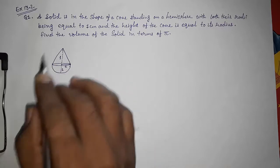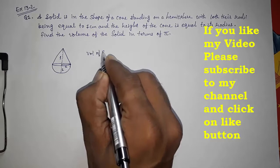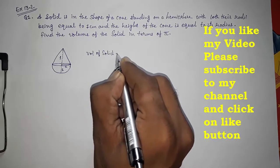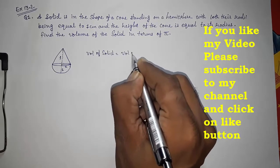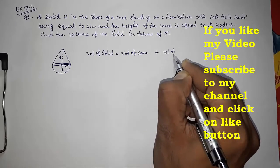Find the volume of the solid in terms of π means we have to find out the volume of this given figure. So for that, volume of solid = volume of cone + volume of hemisphere.